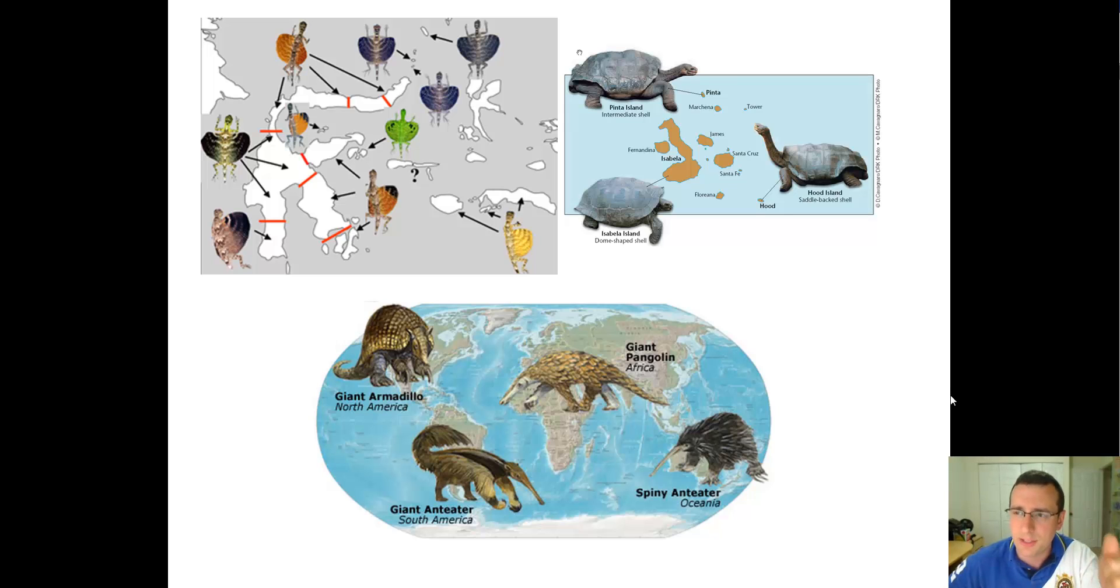Remember, homologous structures is similarities because of common ancestors, but everything else might be different because you're in different environments. And then analogous structures is similarities because of common pressures. So everything else is different because that one pressure was the same, you end up with the same structure for that one trait. So these things, analogous structures is evidence of converging evolution and homologous structures is evidence of divergent evolution.